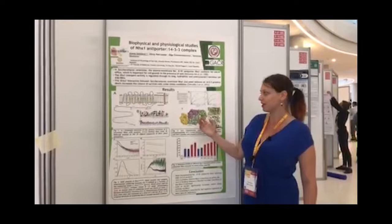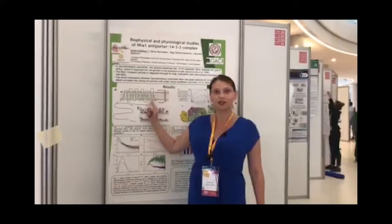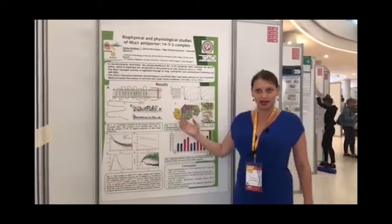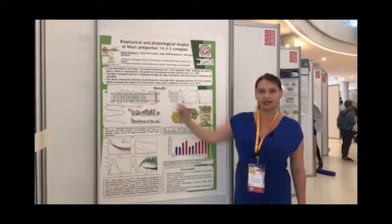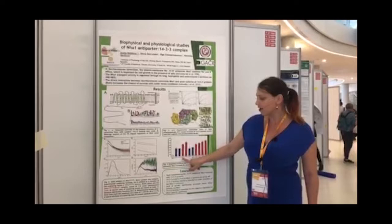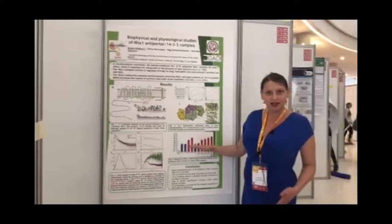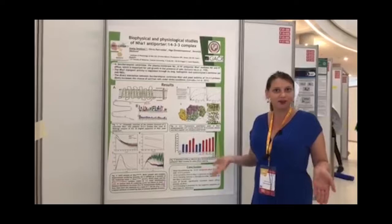First of all, we predicted some serines on the disordered C-terminal of the NHA1 antiporter to be crucial for this protein-protein interaction. We measured the potassium efflux of this yeast antiporter, and you can see that when we mutated serines 479 and 481, the activity of this antiporter rapidly increased. So we thought that may be the 14-3-3 binding site, but we needed to prove it.